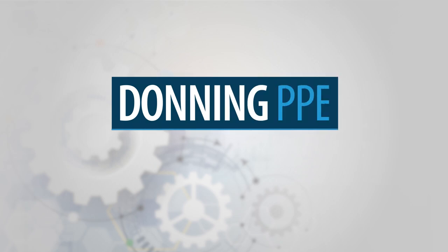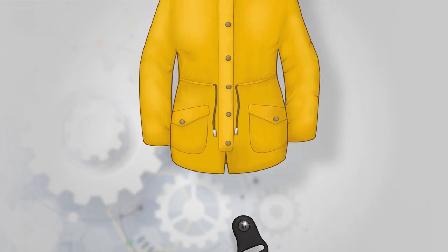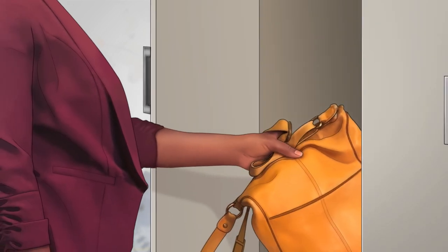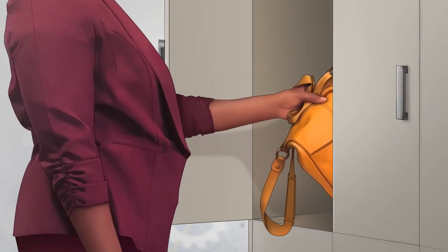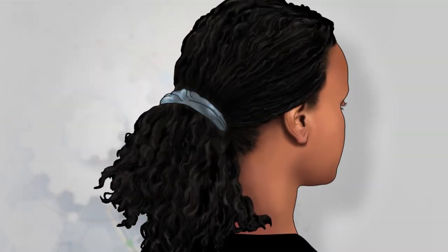The first step is to remove personal items such as jewelry, watches, coats, jackets, cell phones, pens, or additional bags and place them in a location outside of the laboratory. Then, tie back any long hair if present.